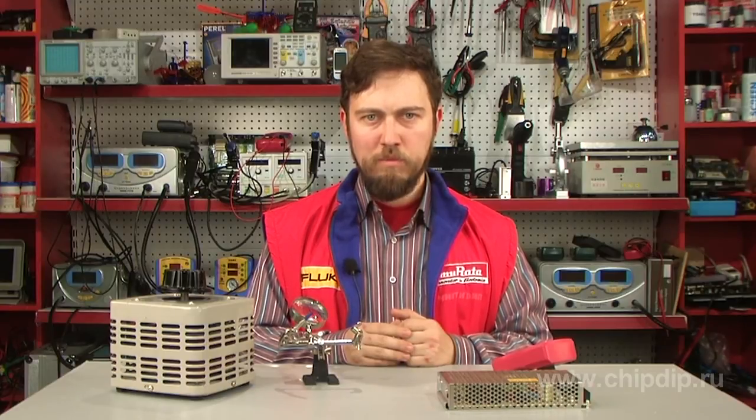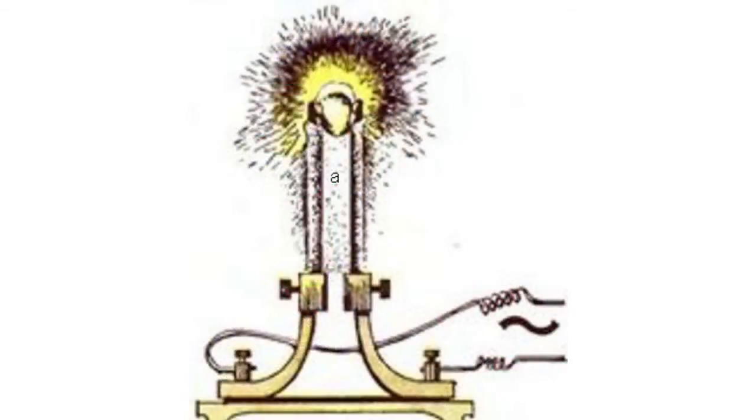To avoid uneven burning of coals, Yablachkov made one of the rods thicker than the other. However, it is not so convenient and profitable. The solution to this problem was to use alternating current instead of direct current to power the candle. In this case, both coals burned evenly.